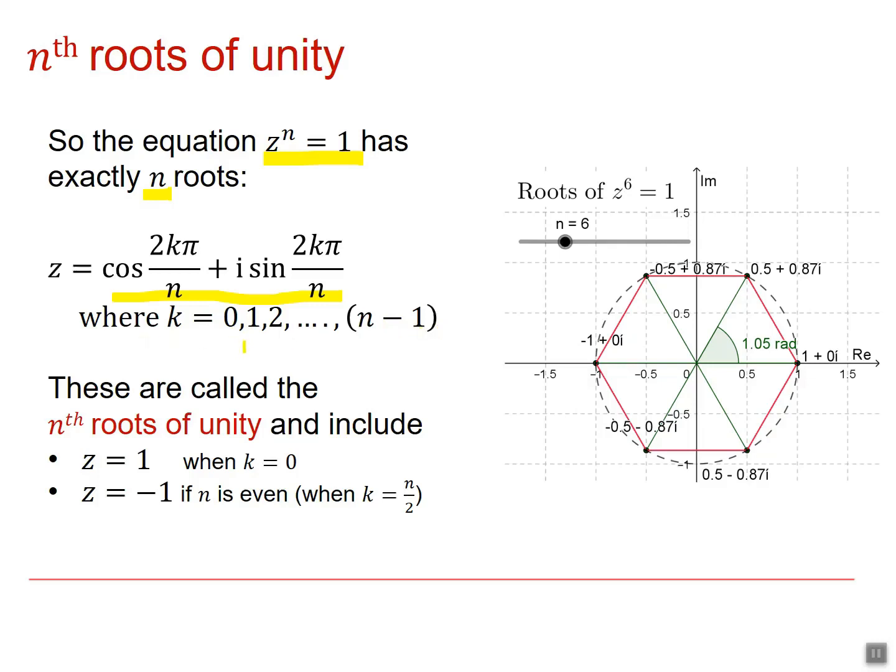In fact, if k is larger than n minus 1, for instance, if it was n, then if you think about this here, it will become 2n pi over n or just 2 pi, and so you'll start to get a repetition of each of the roots.